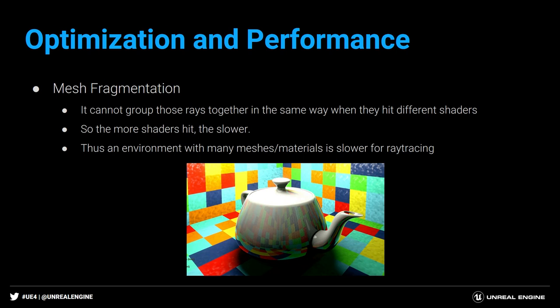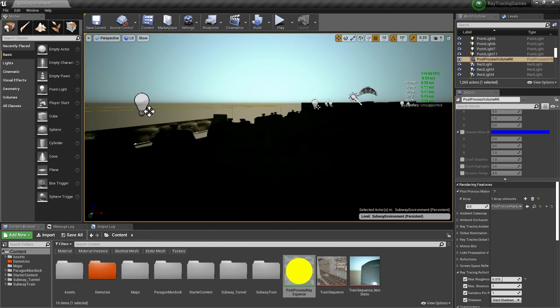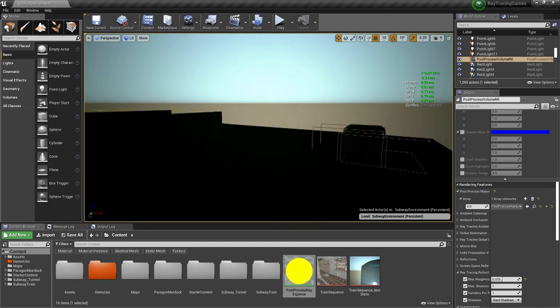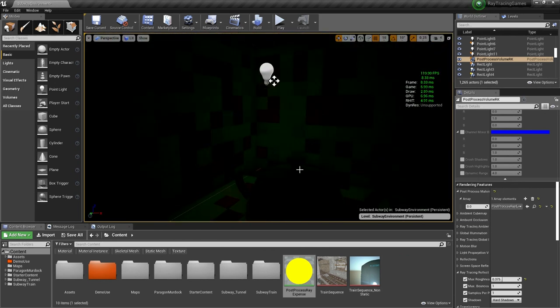Here's a cube with a light inside — lots of different meshes with lots of different materials. There's a normal map, so rays get scattered, hitting lots of different materials. This is a terrible scenario for ray tracing. Performance is around 21 frames per second. But if I enable 'use instancing' — the geometry is exactly the same, the number of draw calls is the same — it runs at 45 frames per second. We doubled the frame rate just because all instances share the same underlying shader, so all rays hit the same shader.